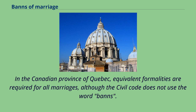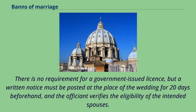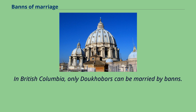In the Canadian province of Quebec, equivalent formalities are required for all marriages, although the civil code does not use the word banns. There is no requirement for a government-issued license, but a written notice must be posted at the place of the wedding for 20 days beforehand, and the officiant verifies the eligibility of the intended spouses. In British Columbia, only Doukhobors can be married by banns.